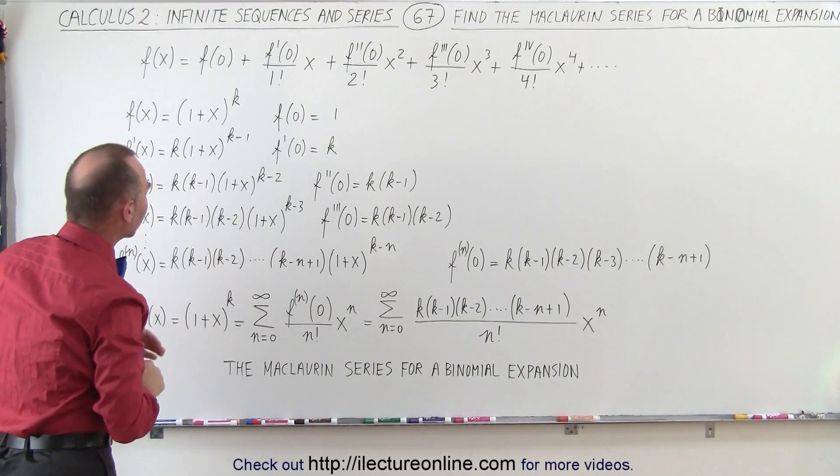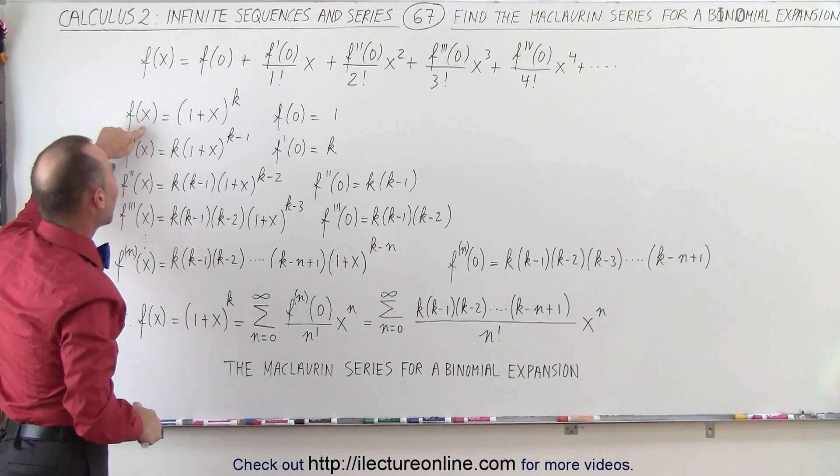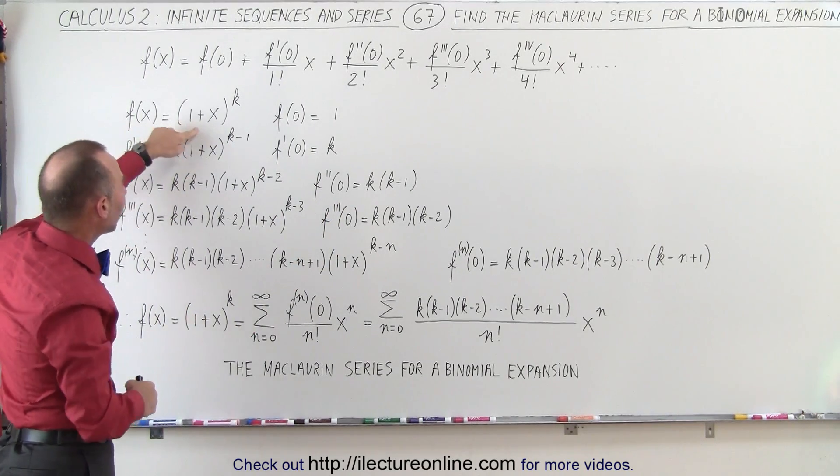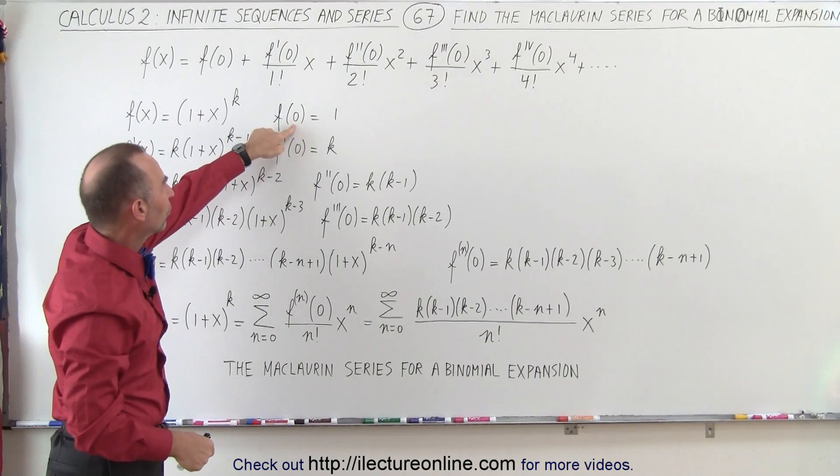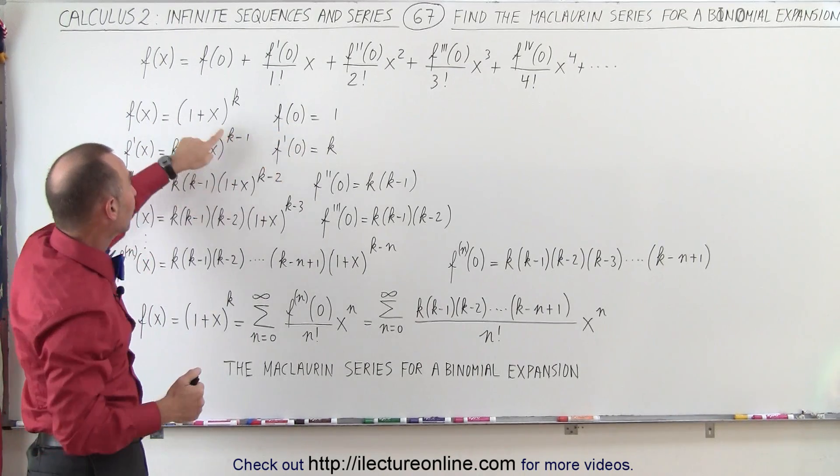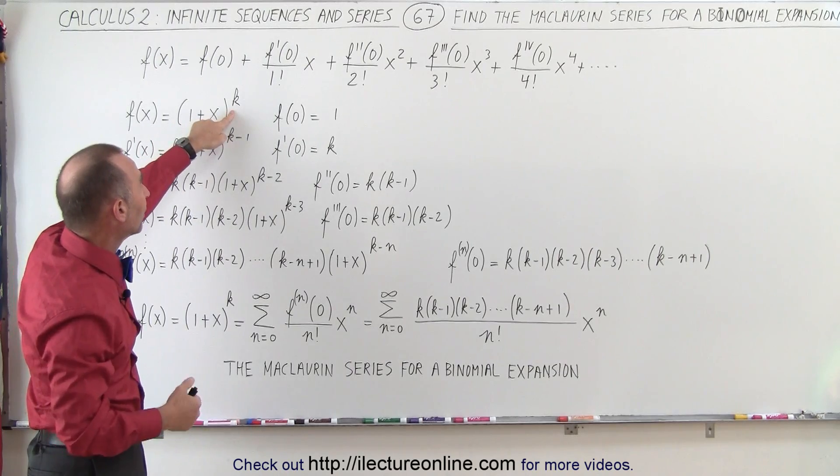We have then what we call a binomial expansion. But we take that now and we evaluate that function as is for x equals 0. When we do that, you can see that when x becomes 0, we have 1 to the k power.